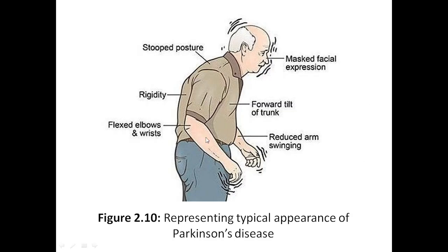These are the typical physical appearances of a Parkinson's disease person: a stooped posture, masked facial expression, forward tilt of the trunk, rigidity in the back, flexed elbows and wrists, and reduced arm swinging. All these things are the typical appearance of Parkinson's disease.